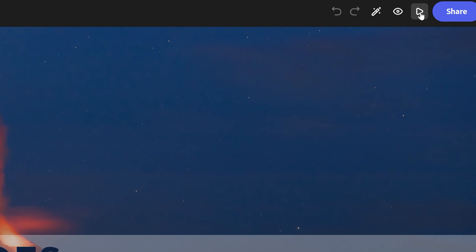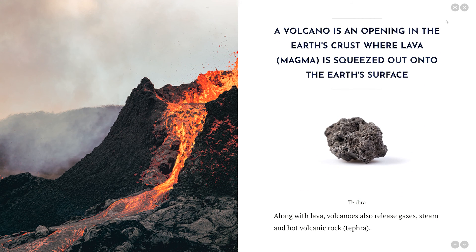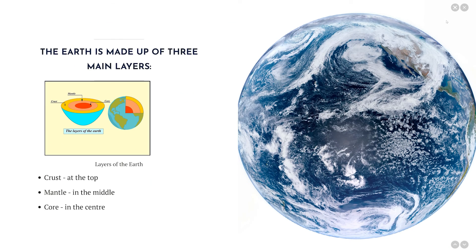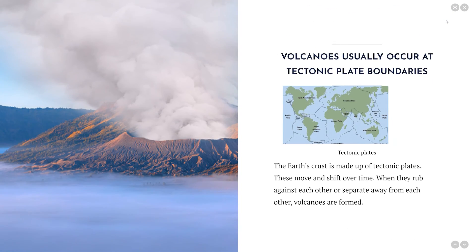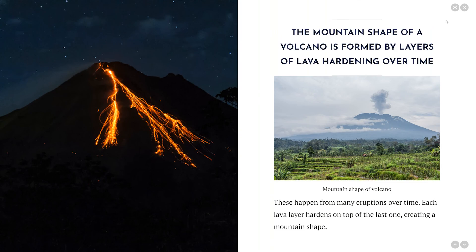Now I'm going to check my work — I'll go to the top right and press Present. I'll use my right arrow key to slide through and look at my five key facts. There's my first one: a volcano is an opening in the earth's crust; I've got an image of tephra — volcanic rock. Then the three main layers of the earth: crust, mantle, and core, with that inset image from Wikimedia Commons. There's information about how volcanoes usually occur at tectonic plate boundaries — again with an inset image of tectonic plate boundaries — and about magma, and finally how the mountain shape of a volcano is formed.